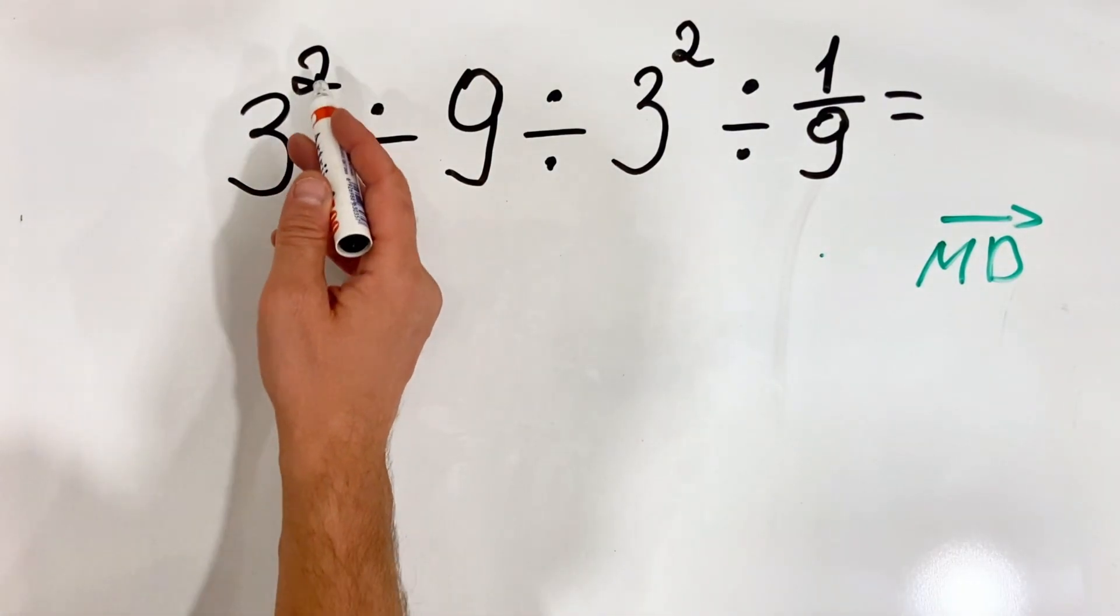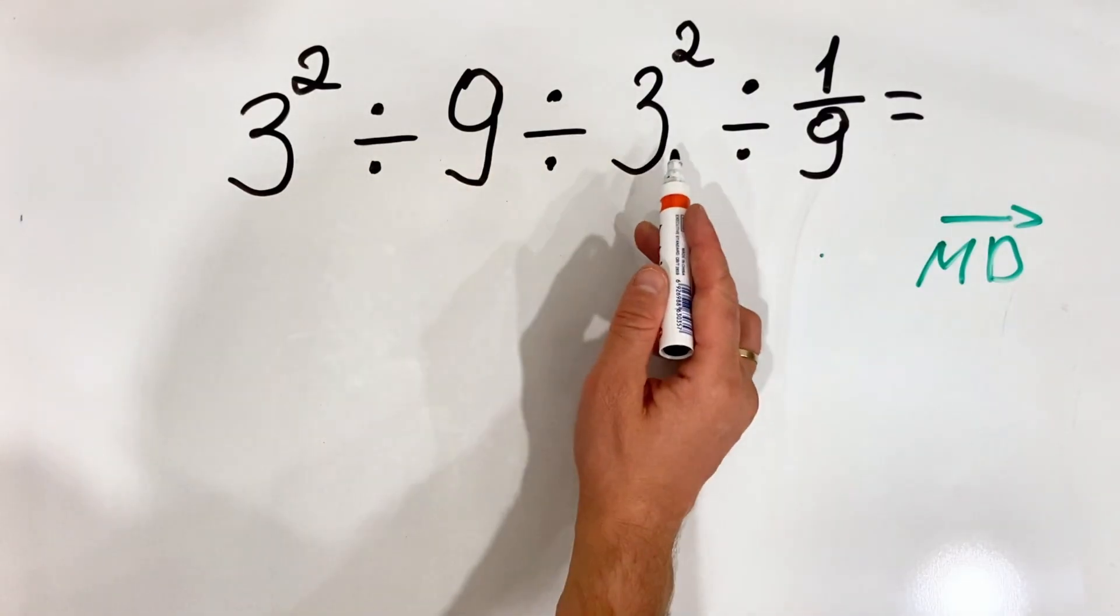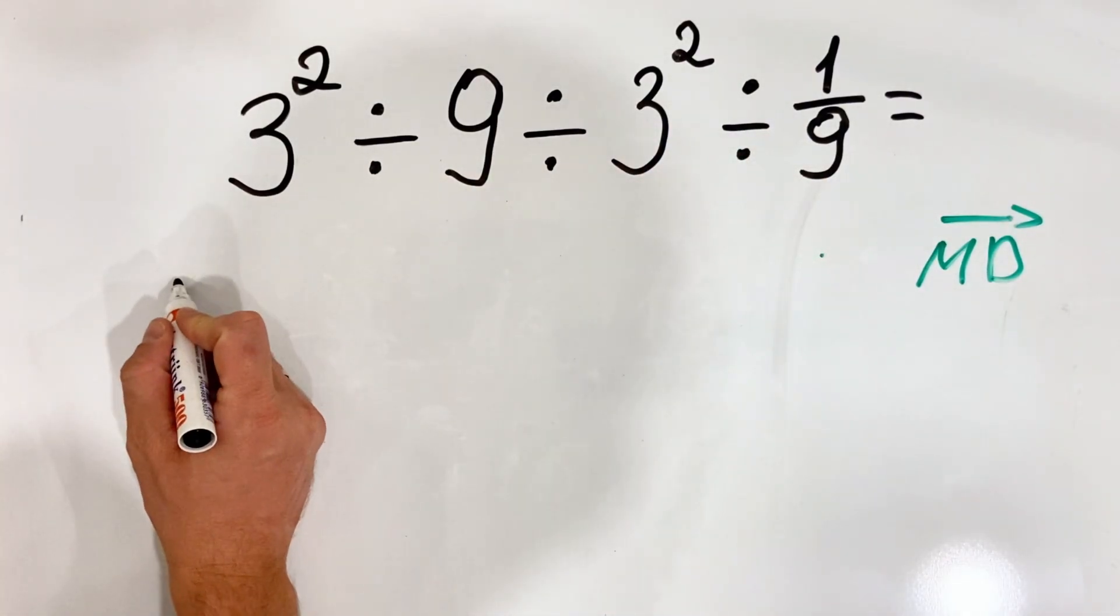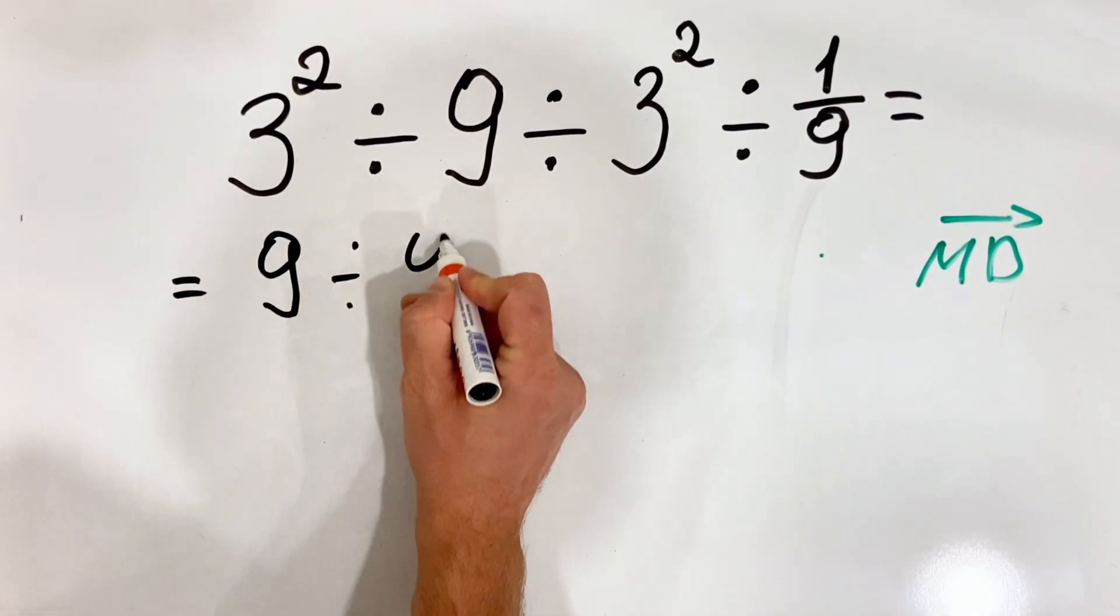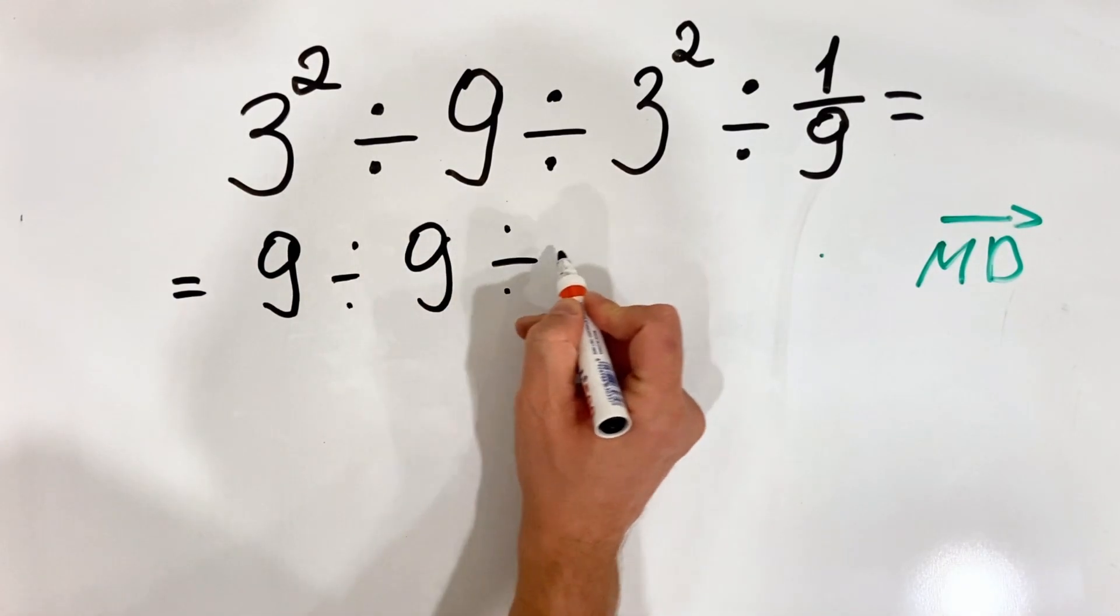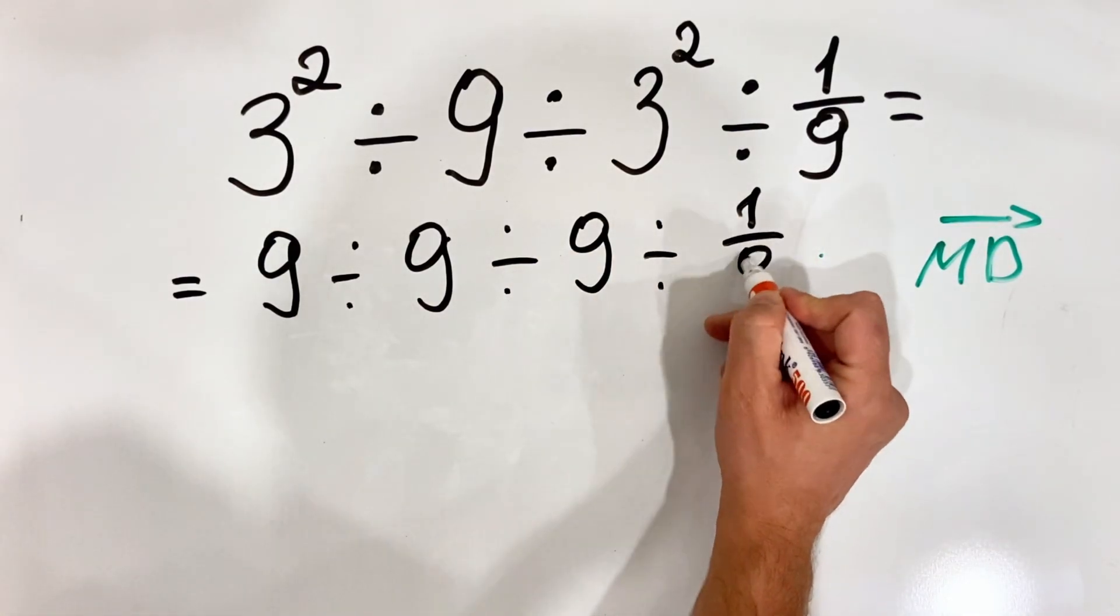First we will do the exponents. 3 squared is 9, 3 squared is 9. So what we get? We have 9 divided by 9 divided by 9 and divided by 1 ninth.